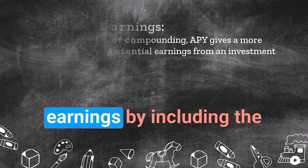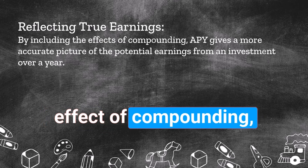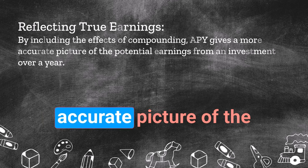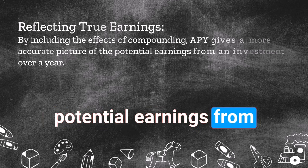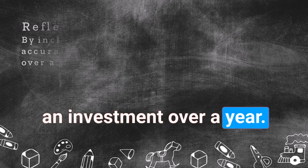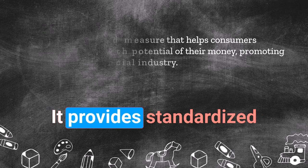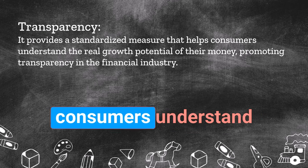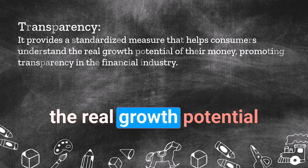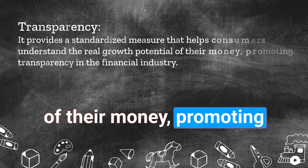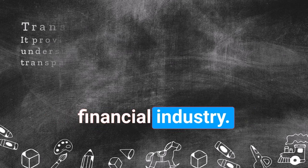Reflecting true earnings: by including the effect of compounding, APY gives a more accurate picture of the potential earnings from an investment over a year. And transparency: it provides a standardized measure that helps consumers understand the real growth potential of their money, promoting transparency in the financial industry.